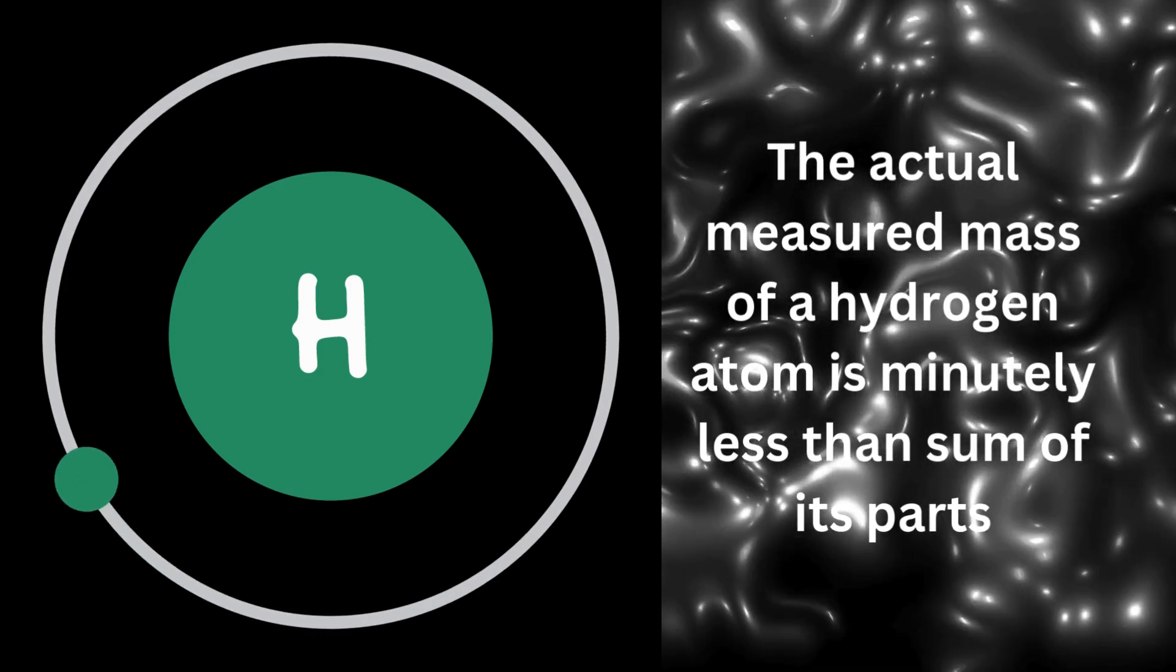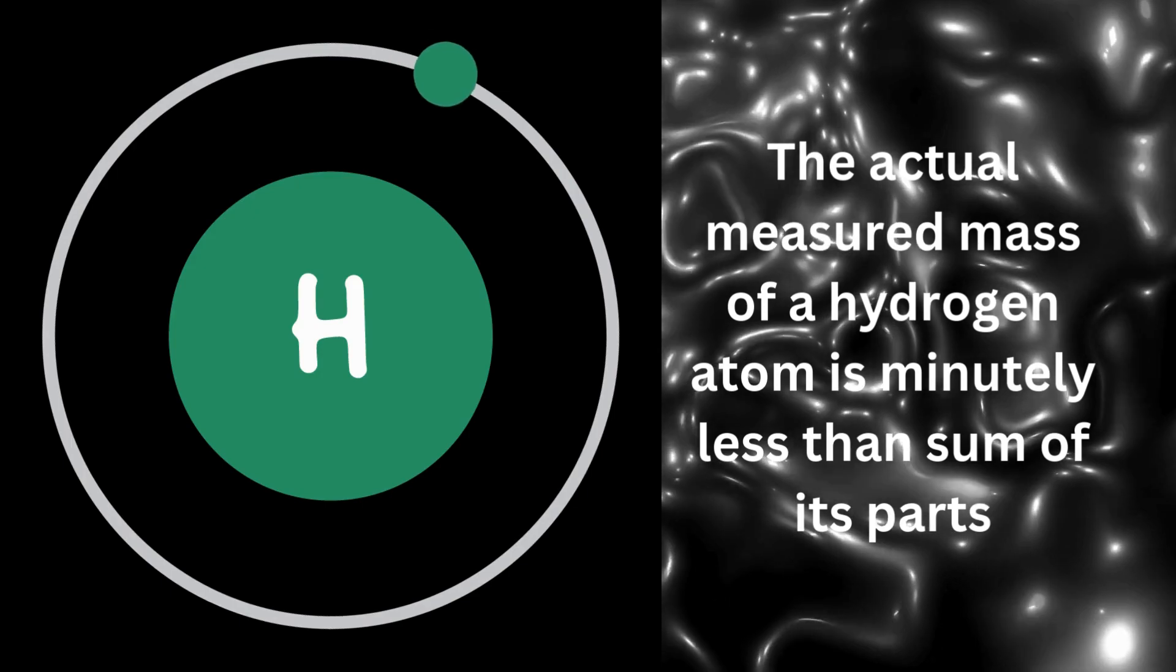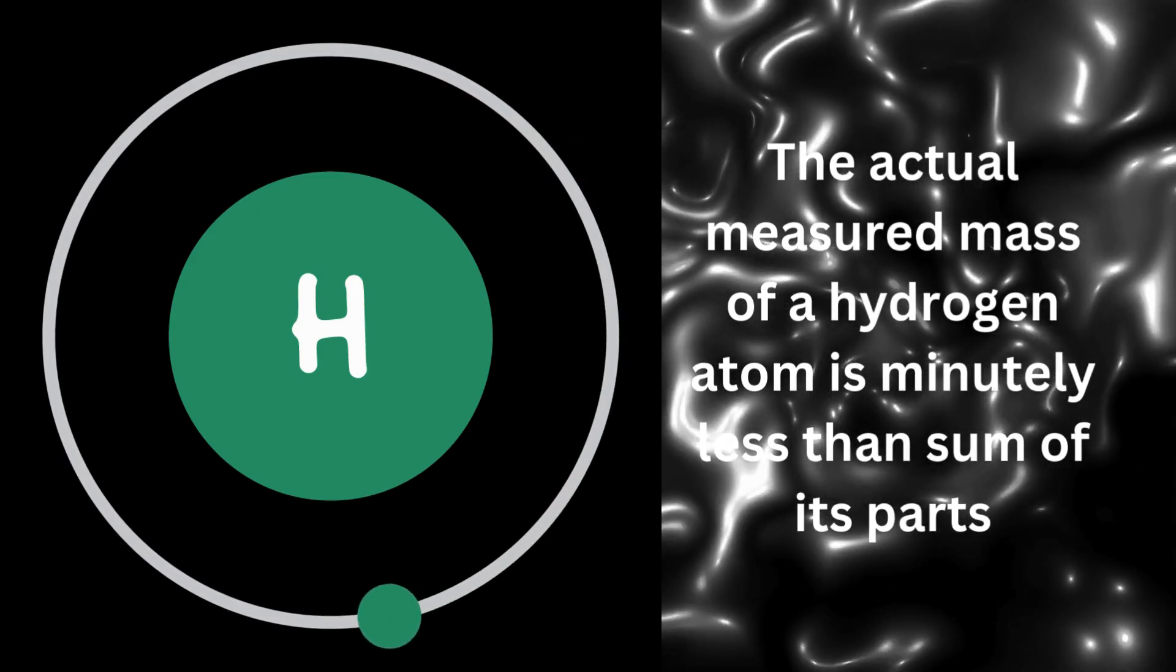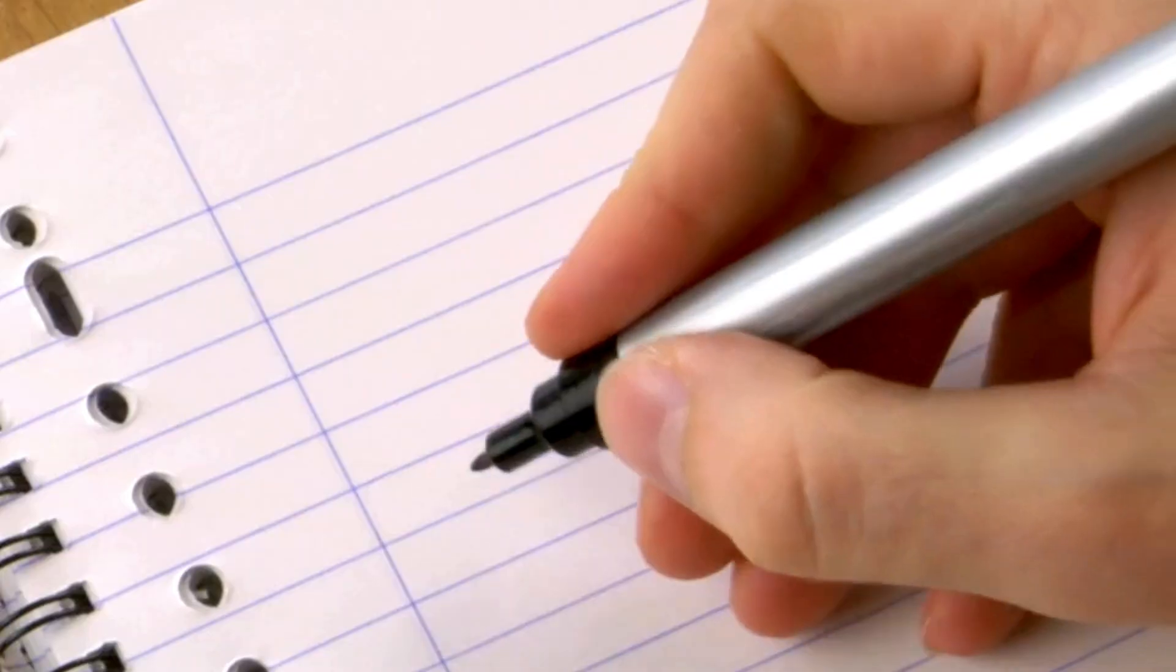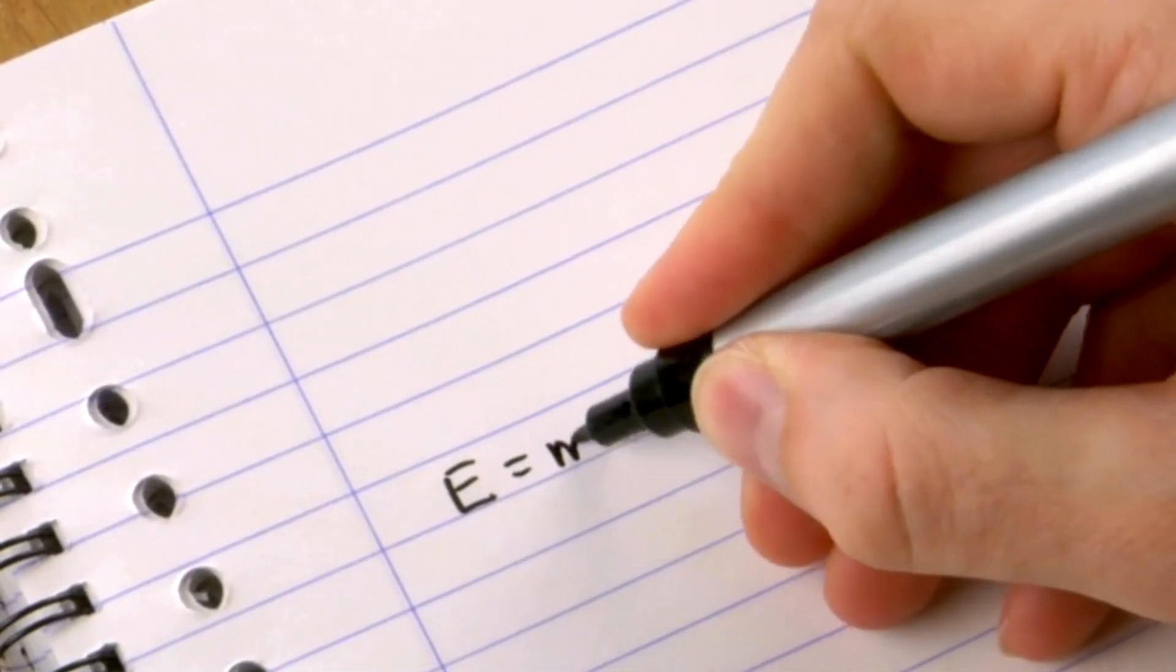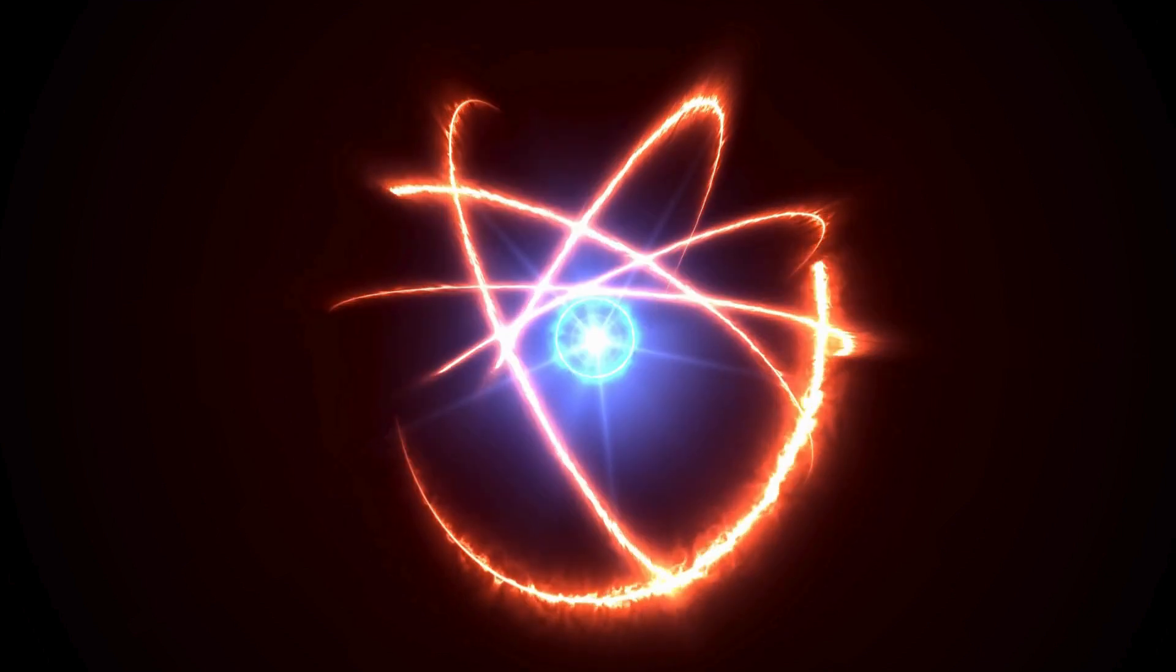This brings us to the concept of mass defect. When protons and neutrons come together in a nucleus, some of their mass is converted into energy which holds them together. This is described by Einstein's famous equation, E equals mc squared. So, when the hydrogen atom is formed, a tiny bit of mass is lost in this process.